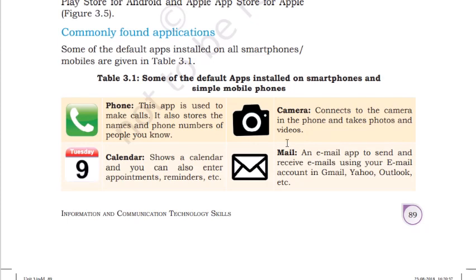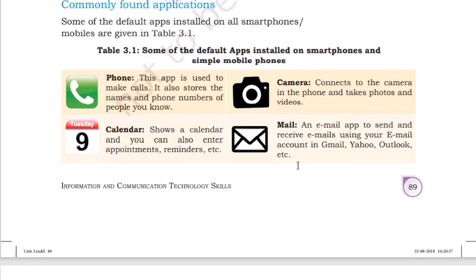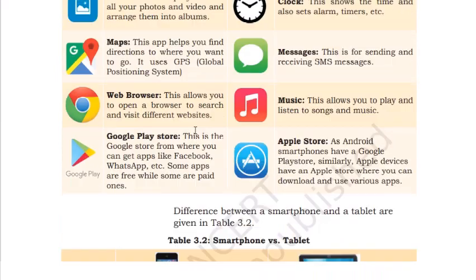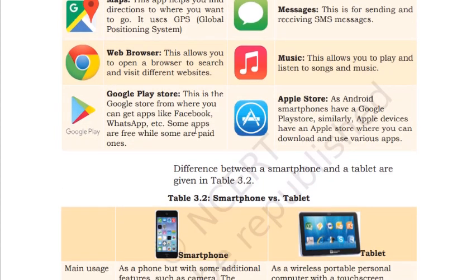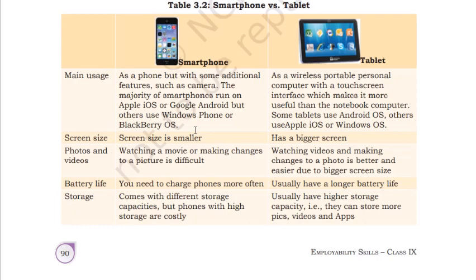When you buy a new phone, some applications are already pre-installed. These include: phone app for making calls and storing names and numbers, camera for taking photographs, calendar, mail, photos to show all stored photos, clock for time and alarms, map, message, web browser, music, Google Play Store, and Apple App Store.